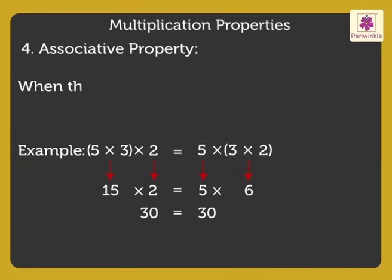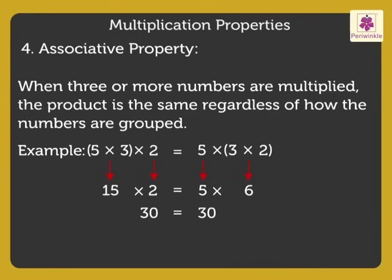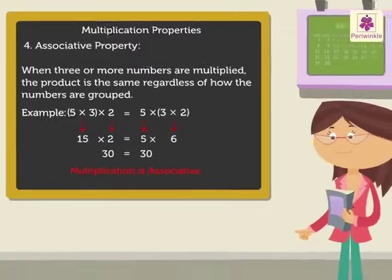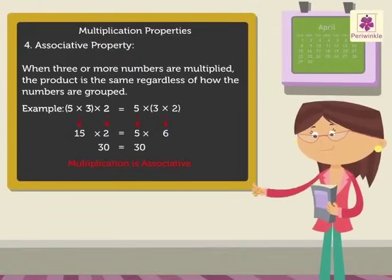Thus, we say when three or more numbers are multiplied, the product is the same regardless of how the numbers are grouped. We can say that multiplication is associative. Wasn't it easy revising multiplication and its properties?